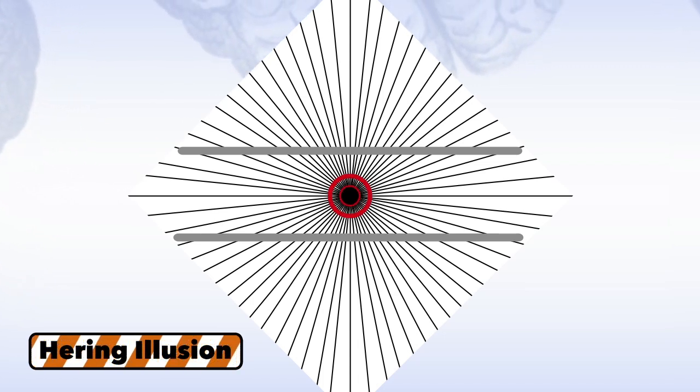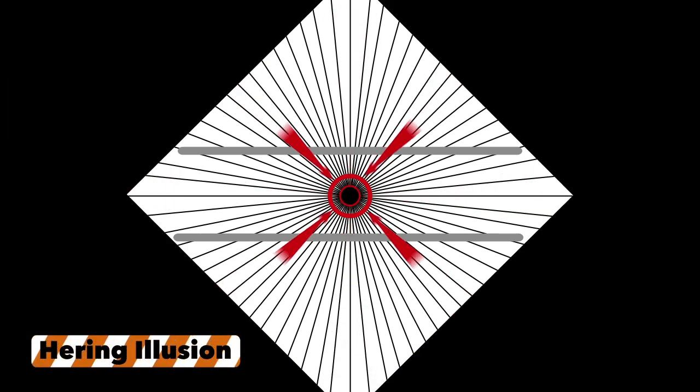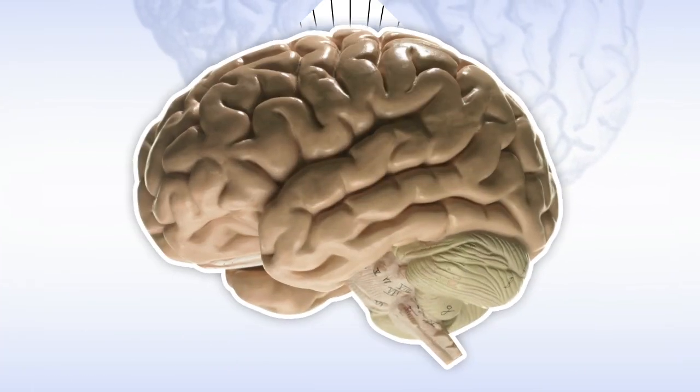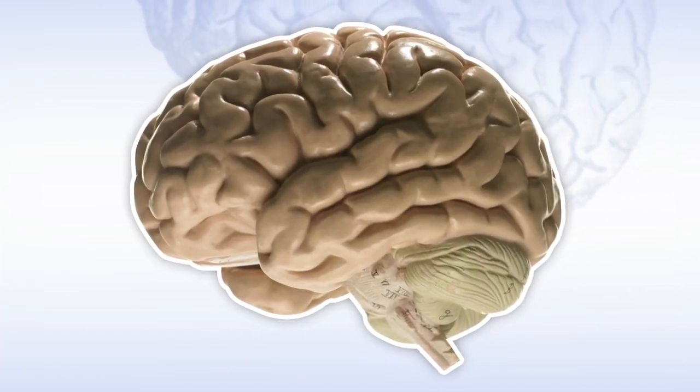It looks like you're traveling towards it. Your brain then thinks these parallel lines are getting closer. That's why they seem to get larger as you approach the center of the radial pattern, and that makes the lines look warped. Not all visual illusions trick our brain into seeing motion.